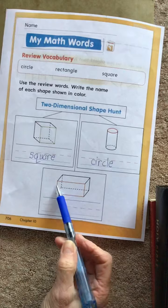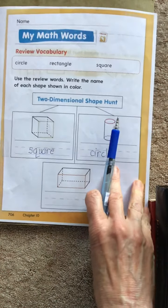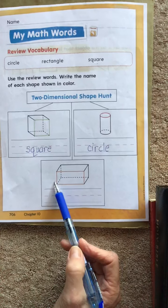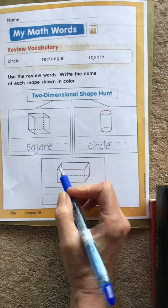And here, this one's in orange. And what is the shape of this face, of a rectangular prism? It's called a rectangle.